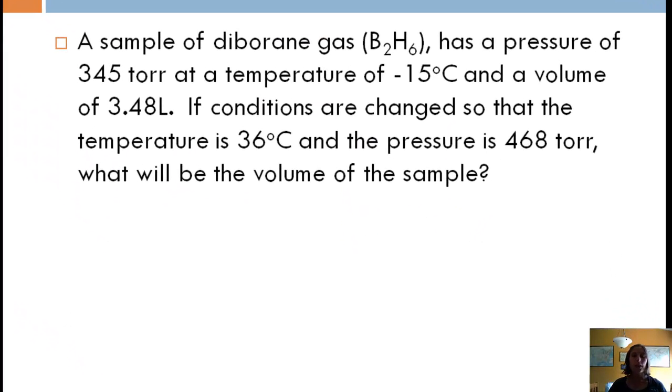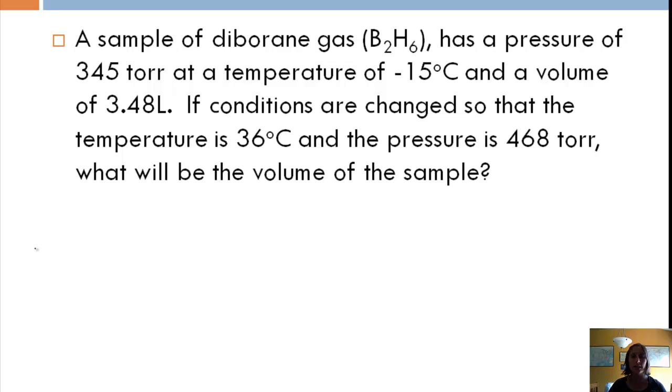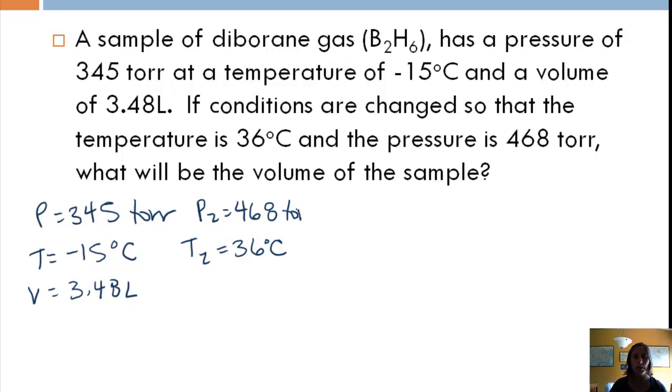Let's take a look at another one. We have a sample of diborane gas has a pressure of 345 torr at a temperature of negative 15 degrees Celsius and a volume of 3.48 liters. If conditions are changed, so now we've got a final condition. Now the new temperature is 36 degrees Celsius and the new pressure is 468 torr. Then we want to know the new volume.